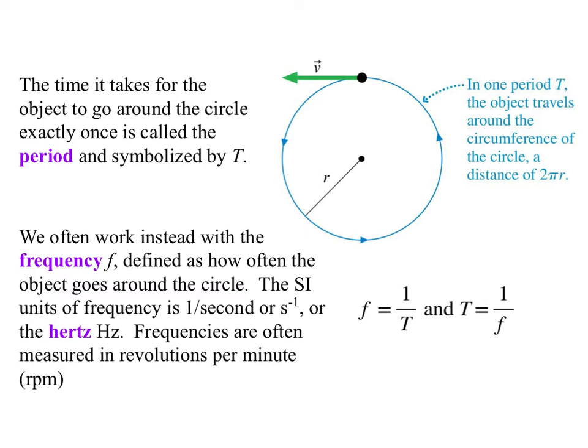In one period, the object travels around the circumference once, which is a distance of 2 pi r. You can notice and see pretty easily that the definitions of frequency and period are such that the frequency is always 1 over the period, and the period is 1 over the frequency. If you have one, you have the other. There's no new information there. You might wonder, if there's no information, then why do we bother having two different things, which is a really good question.